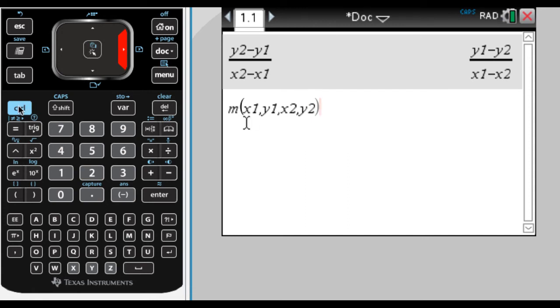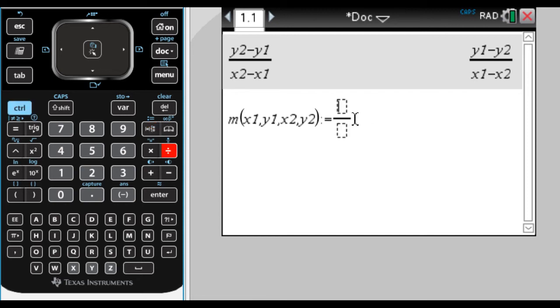So I need to make a function, so I'm going to go to Control, and then the Templates button gives me a colon equals. And now I need to type the formula, so I'm going to type it again. So Control, and then division gives me this. So I want to do y2 minus y1, and then I want to divide that by x2 minus x1. And when I press enter here, it's going to say done.